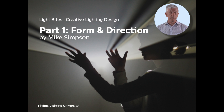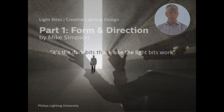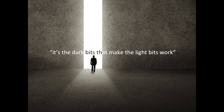In this presentation we'll see how the direction of light can help to create and enhance the form of an object or surface. We do this by making shadows. You might think that shadows should be avoided, but it is the very presence of shadows that gives us the information we need to identify the shape and form of an object. A good friend of mine always said, it's the dark bits that make the light bits work.